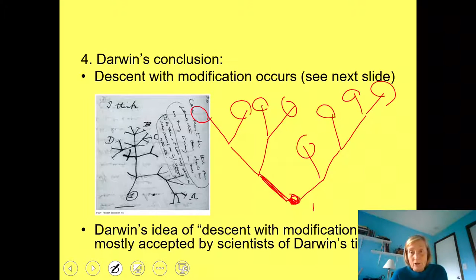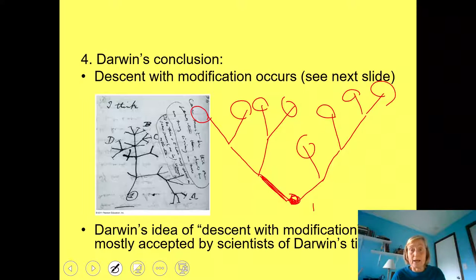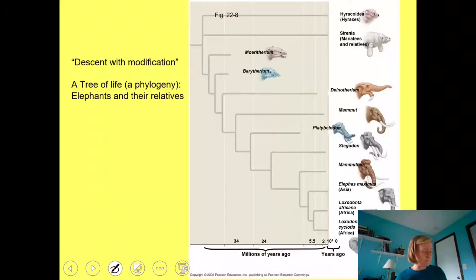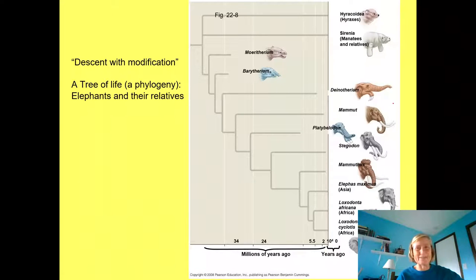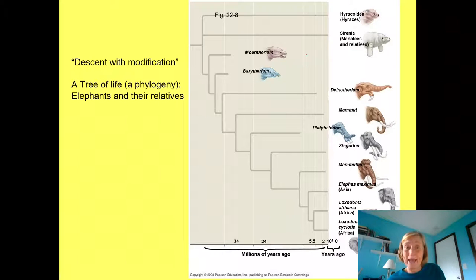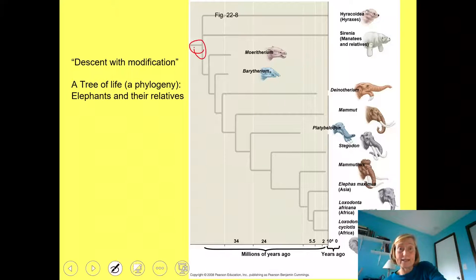Lamarck came up with the same general idea about 50 years earlier. The question is: how? Darwin's idea of descent with modification was mostly accepted by scientists at the time — evolution wasn't really a problem. We can see this in a phylogeny of elephants and their relatives, where a single ancestor gives rise to all these different types of organisms. Some, like mammoths, are no longer alive. Interestingly, manatees are also connected to elephants in this tree.